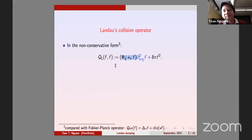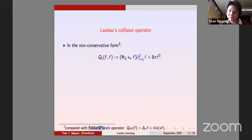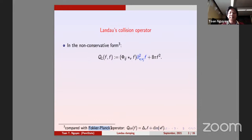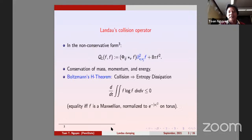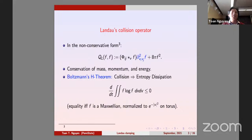In plasma physics, sometimes it's easier to use the Fokker-Planck operator — just dv squared of f — so you get a transport equation equal to diffusion in v. Adding collisions doesn't change total mass, momentum, and energy; they are conserved. There's a famous Boltzmann H-theorem that also holds for the Landau collision operator, meaning that if you add collisions you have entropy dissipation: d/dt of the integral of f log f is decreasing, equal to zero only if f is Maxwellian.